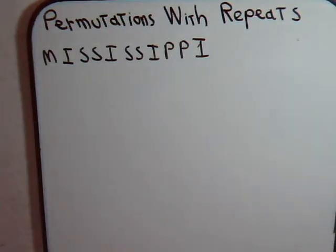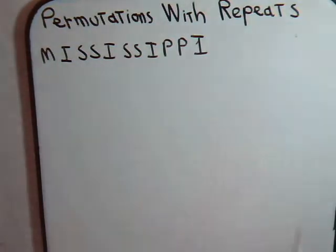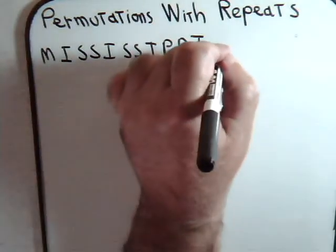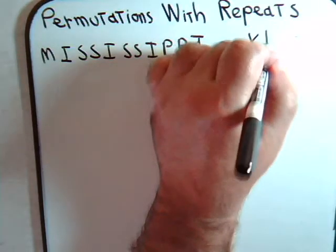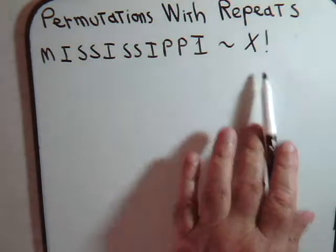The word Mississippi has eleven letters total, but out of these eleven letters we see that I is repeated four times, S is repeated four times, and P is repeated two times. So how many permutations can we get out of the letters that comprise Mississippi? If they were all distinct we would say eleven factorial, but we don't have eleven distinct letters, so let's say the answer is x factorial.